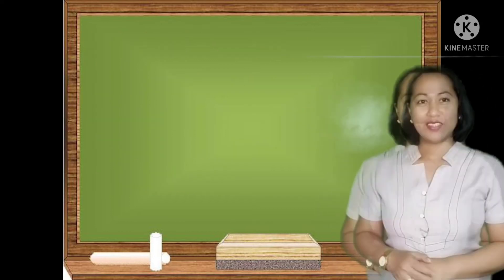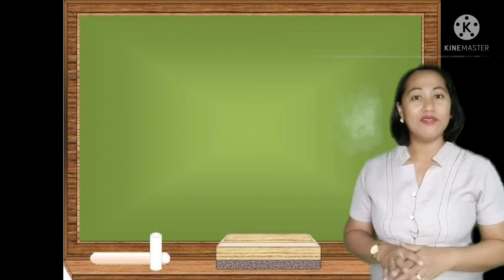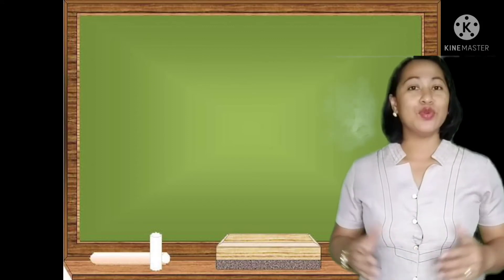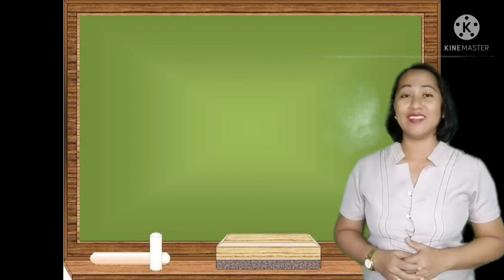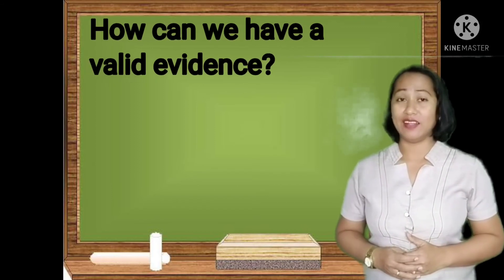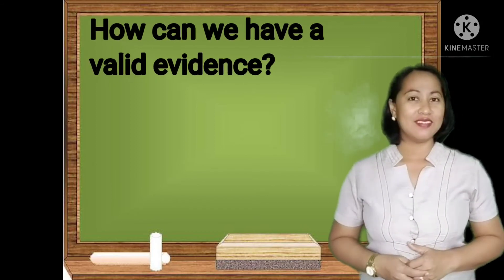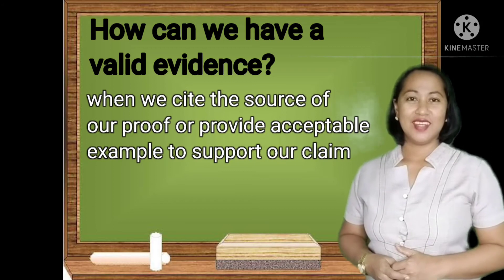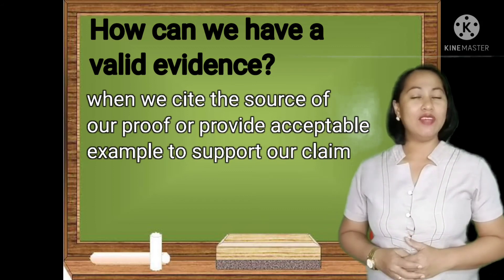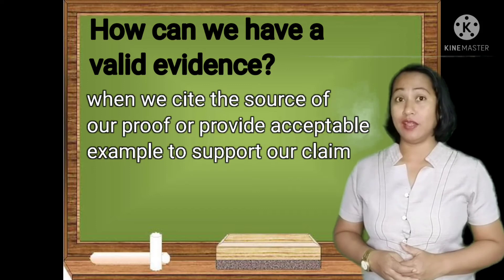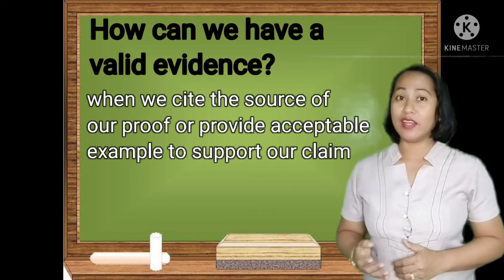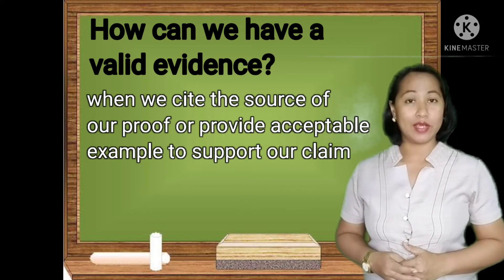Now we know what valid evidence is. Our next problem is to ensure that we have valid evidence. How can we ensure that? We can make sure that our evidence is valid if we are able to cite the source of our proof and provide acceptable examples to support our claim.